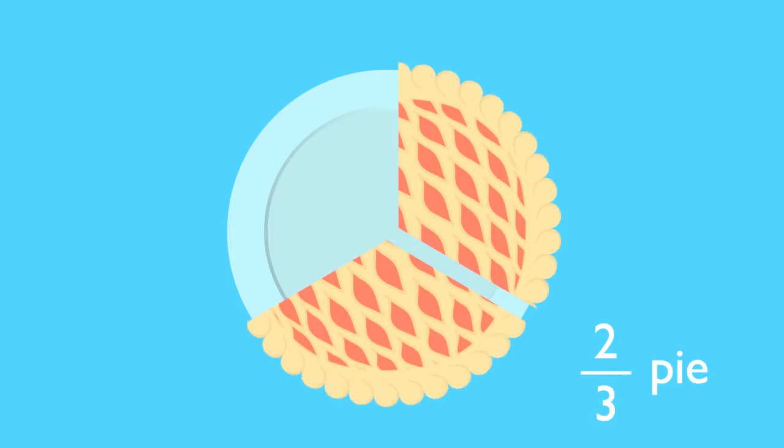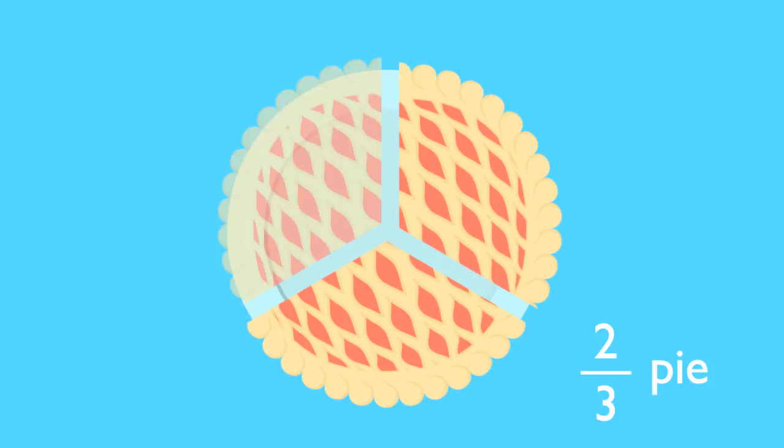This is 2 thirds of a pie. There are two slices left. That number becomes the numerator. That's the number on top. The pie was divided into three slices total. 1, 2, 3. This number becomes the denominator, the number on the bottom. Two out of three slices are remaining. That is 2 thirds of a pie.